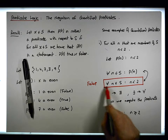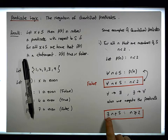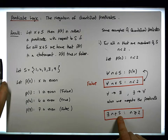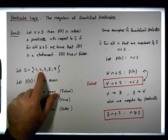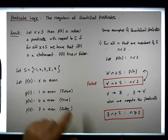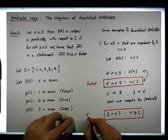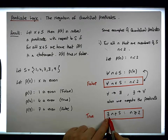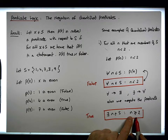So the original was false, meaning its negation must be true. We're now asking: does there exist an n that's an element of s such that n is greater than or equal to 2? Yes, there does. 4 is an example, 7 is an example, 3 is an example, and 9 is an example. So this particular quantified predicate is now true, because there does exist an n in s for which this negated predicate is actually true.